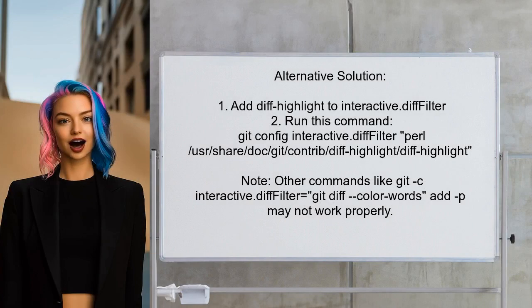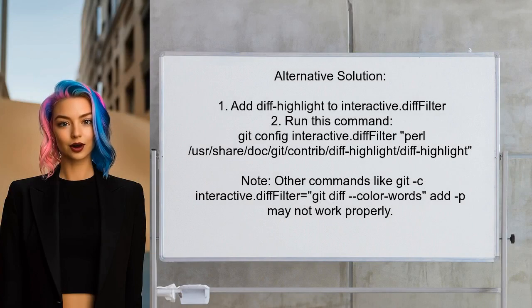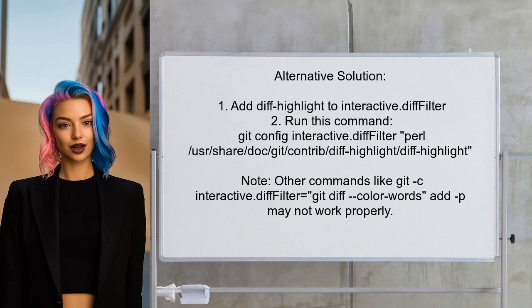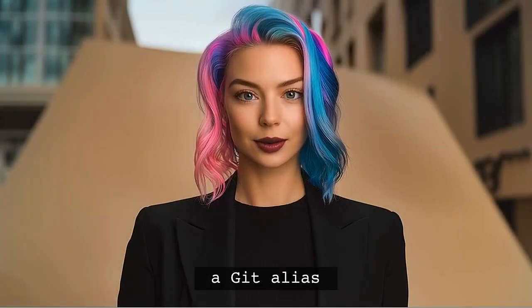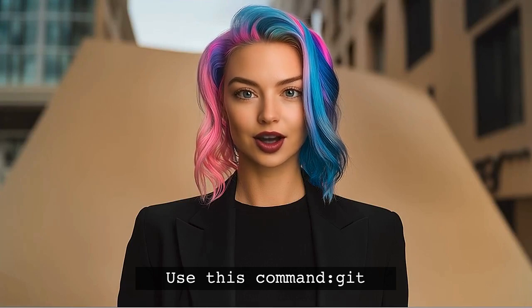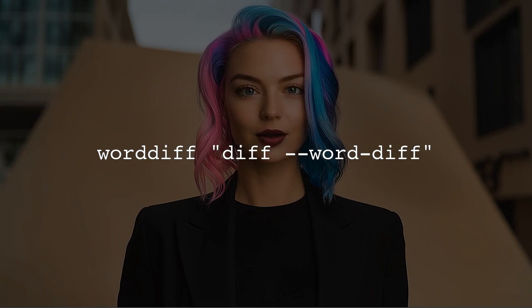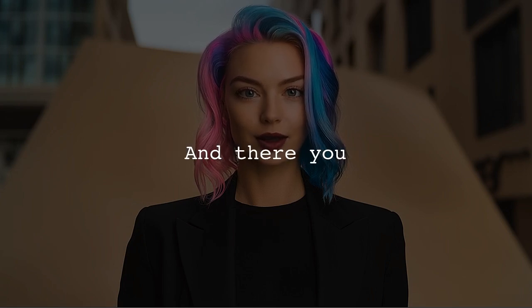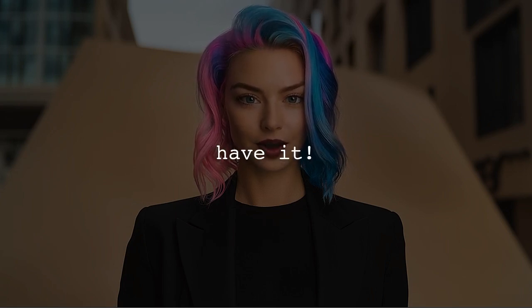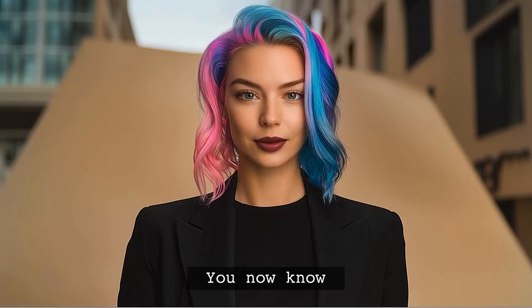Another alternative solution is to add diff-highlight to the interactive.diff filter configuration. This method is simple and works since git version 2.9, and you can do this by running a specific command on Debian or Ubuntu. Here's the tip I promised: consider creating a git alias for this command — it can save you time and make your workflow smoother. Just type git config --global alias.worddiff diff --word-diff to set it up.